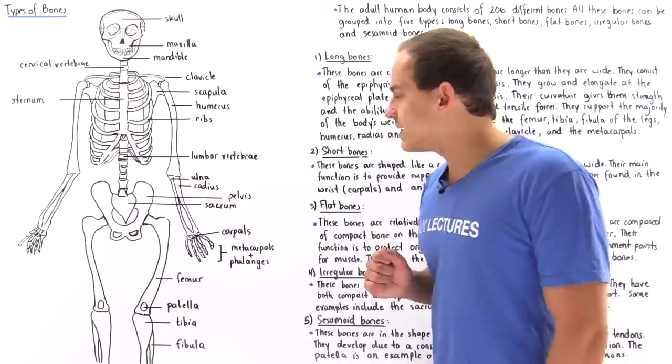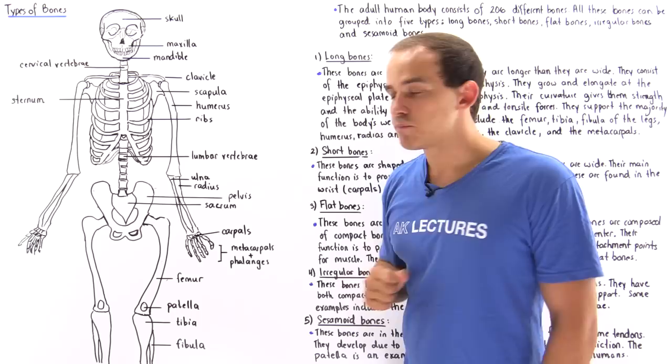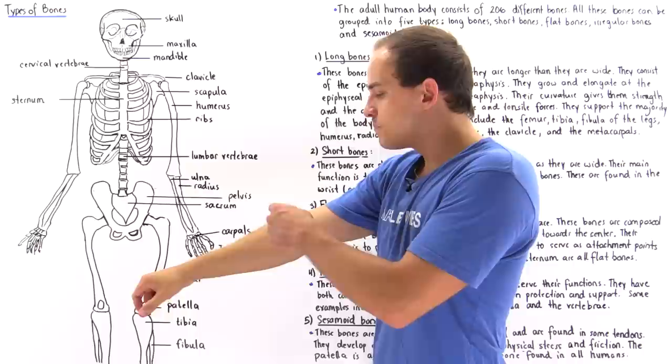We have the clavicle, also known as the collarbone — this is an example of a long bone. In the arm, we have the humerus, as well as the radius and the ulna. These are also examples of long bones.